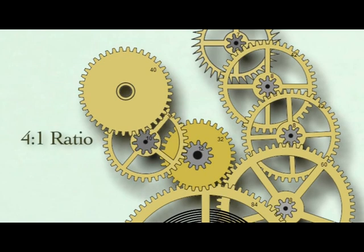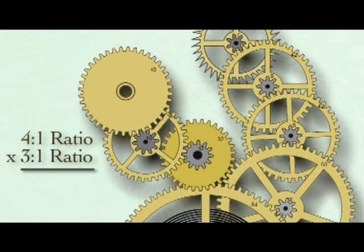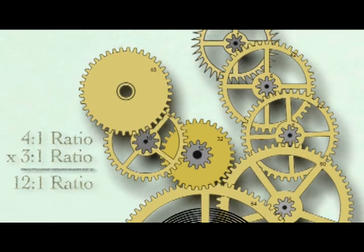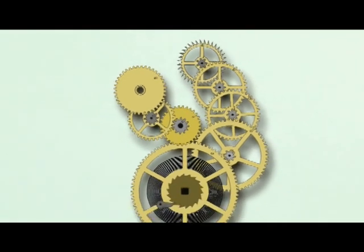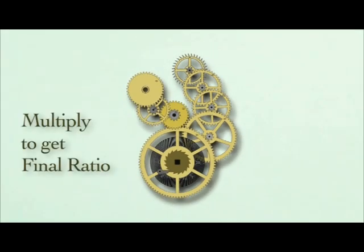To get the total ratio, we now multiply the two individual ratios and the final ratio is 3 times 4 or 12 to 1. The center wheel will make 12 revolutions for each revolution of the hour pipe. Remember this is true for all gear ratios - you multiply to get the final ratio.